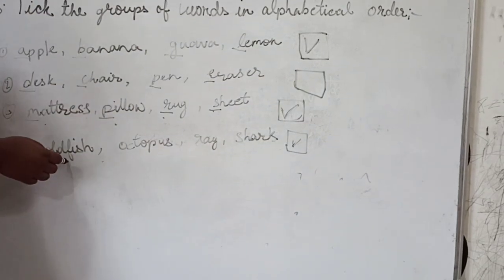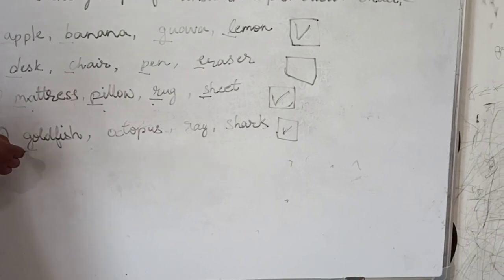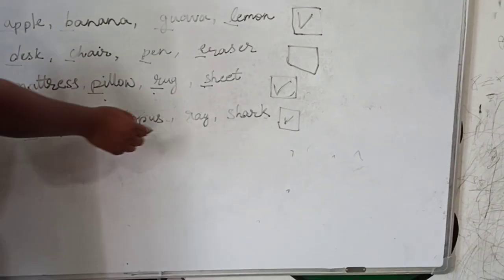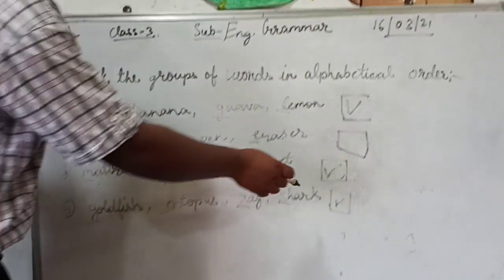Number 4: Goldfish, Octopus, Ray, Sharp. See the first letter of these words: G - Goldfish, O - Octopus, R - Ray, S - Sharp. Are these words in alphabetical order? Yes. We will tick it.